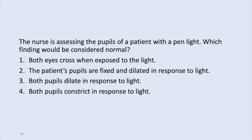Practice question: The nurse is assessing the pupils with a pen light. Which finding is normal? Assessing ocular movements is incorrect for this test. Fixed and dilated pupils that don't respond to light indicate neurologic pathway damage and are incorrect. Both pupils dilating instead of constricting to light is indicative of narcotic influence and is incorrect. The correct answer is that both pupils should constrict in response to light — the direct and consensual constriction to light.